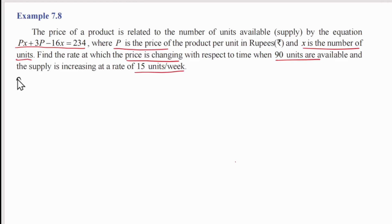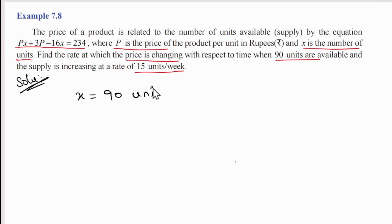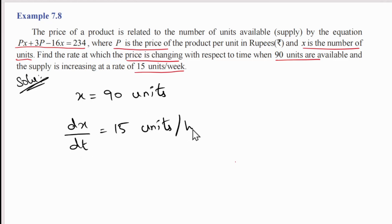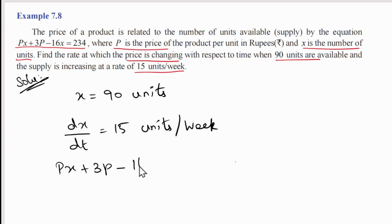Solution: the given data is x = 90 units, and dx/dt = 15 units per week. The relation is px + 3p - 16x = 234.